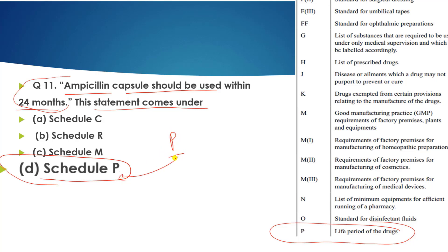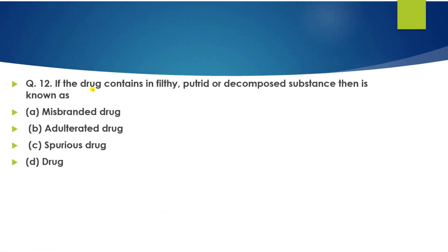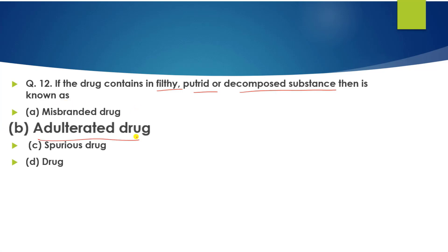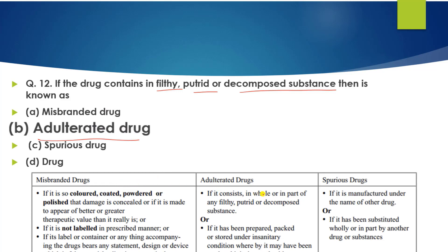Question number 12: If a drug is contained in filthy, putrid, or decomposed substance, what do you call it? The answer is an adulterated drug — if it consists in whole or in part of such substance. Note: misbranded drug and spurious drug are also found in university and competitive examinations.